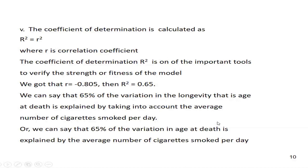We can say this is not a bad model — 65% variation of our longevity is explained by the independent variable, number of cigarettes per day. Normally, if R squared is more than 0.50, that is, more than 50%, we call it a good model. Remember that the coefficient of determination is a very important tool to compare models. Whichever model has a higher R squared is better, and normally the value of R squared goes up to one — that is, 100%.